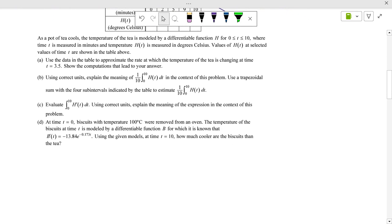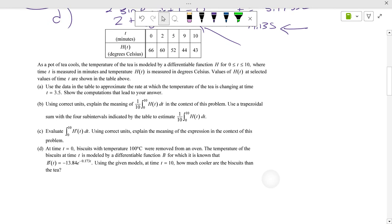As a pot cools, the temperature of the tea is modeled by this function up here, where t is measured in minutes and h is measured in degrees Celsius. The values of h of t are selected in the table above. Use the data to approximate the rate at which the temperature of the tea is changing at time equals 3.5.